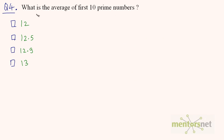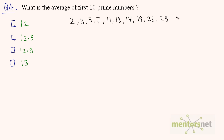Question 4: What is the average of the first 10 prime numbers? You must remember the first 10 prime numbers: 2, 3, 5, 7, 11, 13, 17, 19, 23, 29. That's 10 prime numbers.